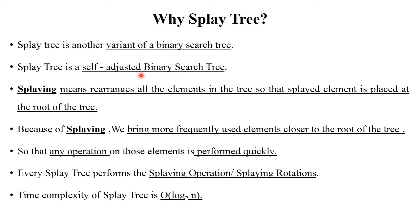It is a self-adjusted binary search tree. Splaying means after performing each and every operation on the tree, it rearranges all the elements. After performing the operation, the inserted element moves to the position of the root. Similarly, the deleted element is also placed at the root position. Because of splaying, we bring more frequently used elements closer to the root of the tree.